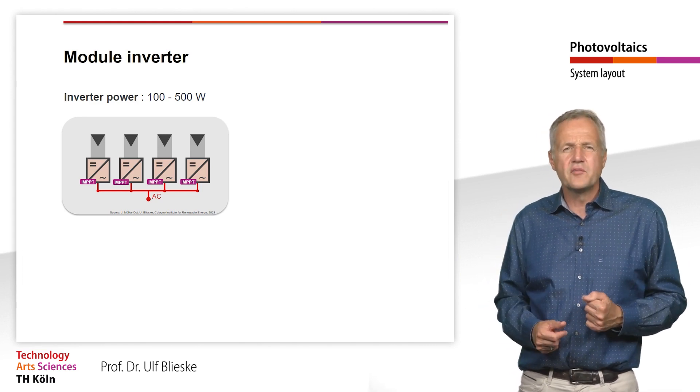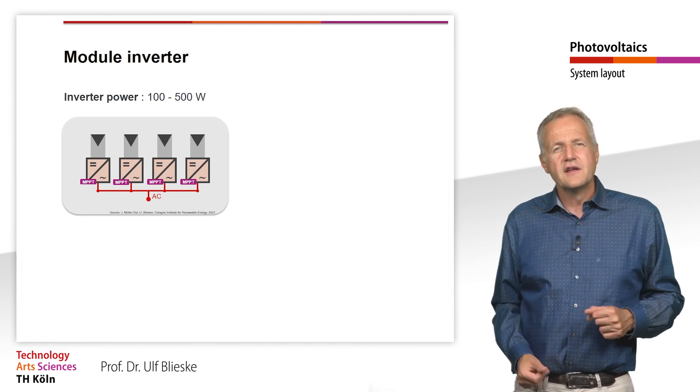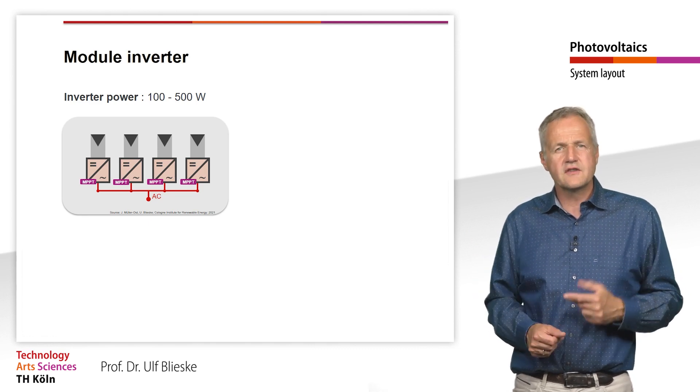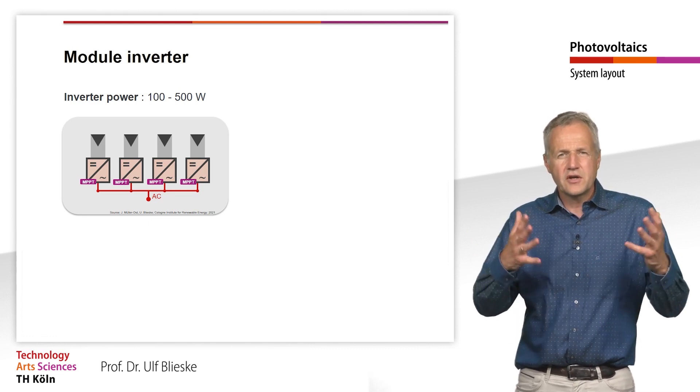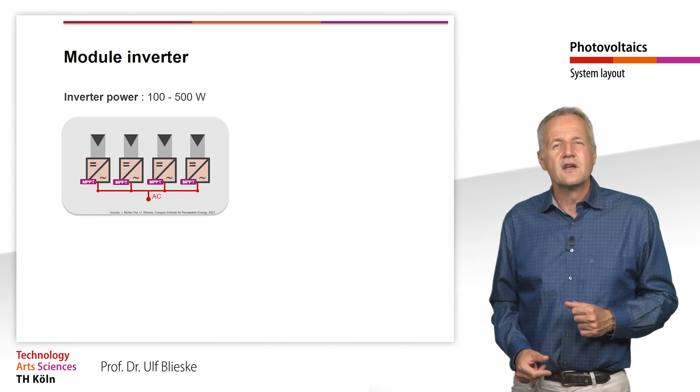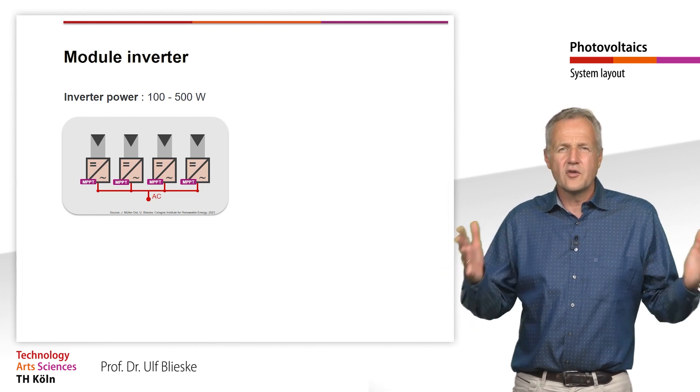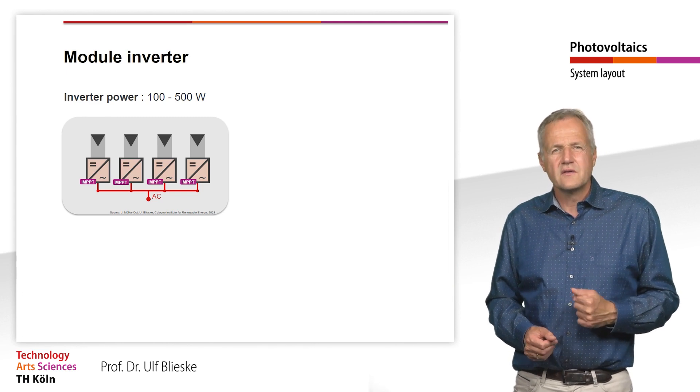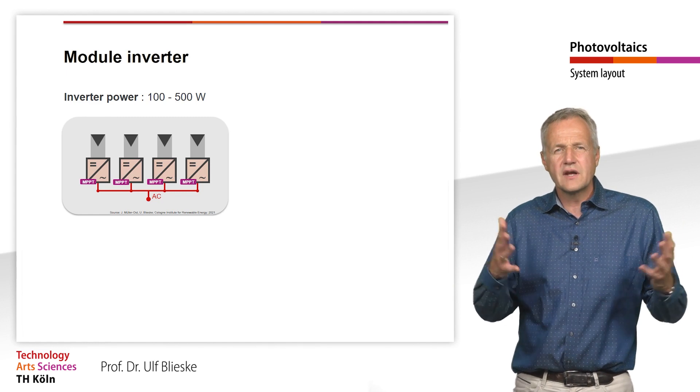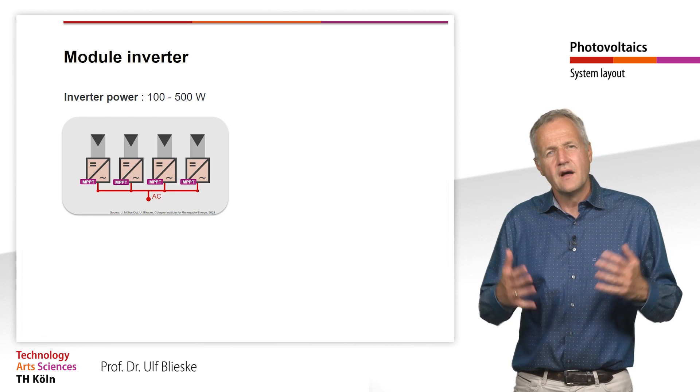Another advantage of the module inverters comes from the fact that they are mounted directly on the back of the module. This eliminates the need for DC wiring to the modules, which in turn reduces system costs. Last but not least, a PV system with module inverters can be expanded as needed. So, if more modules are to be installed after a few years, there is no problem with module inverters. This would not be so easy with systems using string inverters, as for string inverters, there is a maximum number of modules due to its maximum input voltage.